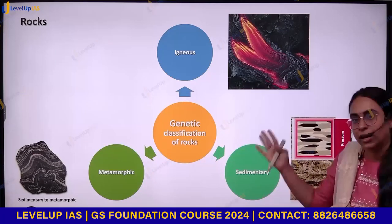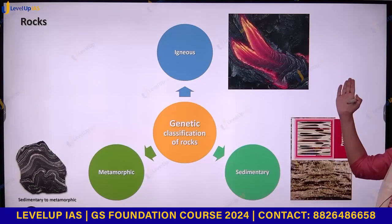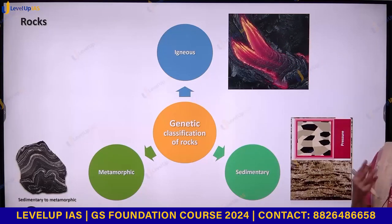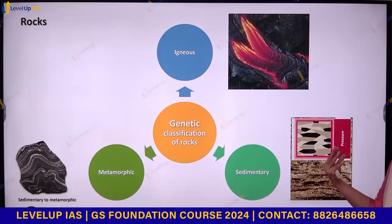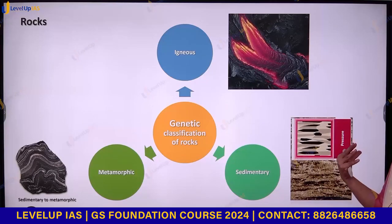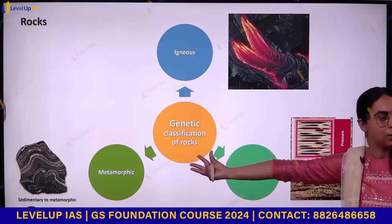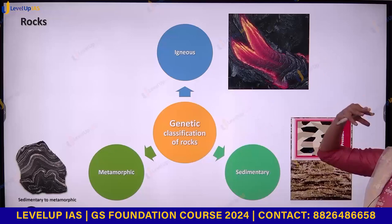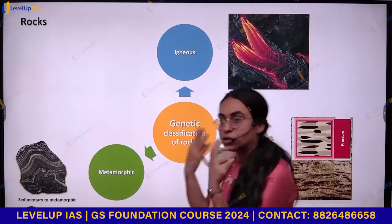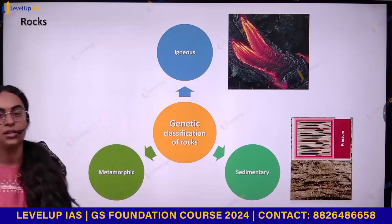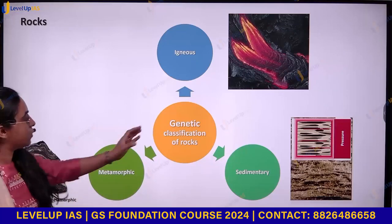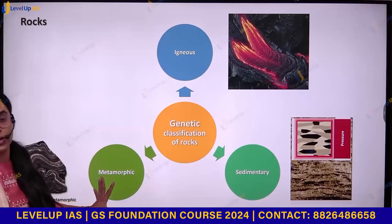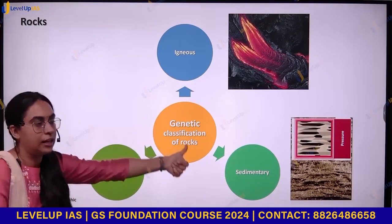Granite is an igneous rock that under pressure and temperature change can become gneiss. Limestone, a sedimentary rock, under temperature and pressure change can become marble. Sandstone can change under extreme temperature and pressure and become a new rock called schist. This is basically the classification of rocks.